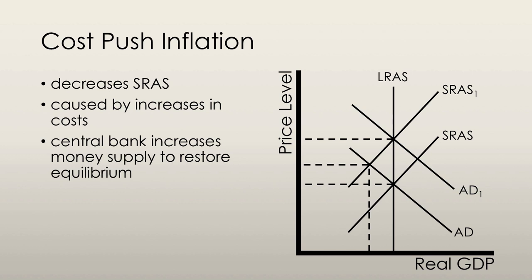In this situation, the central bank increases the money supply to boost aggregate demand in order to restore long-run equilibrium. A situation in which real GDP decreases and the price level rises, caused by a decrease in the short-run aggregate supply, is called stagflation. As with any inflation process, there must be a sustained increase in the general price level; thus, the process must be reoccurring for it to be considered inflation.